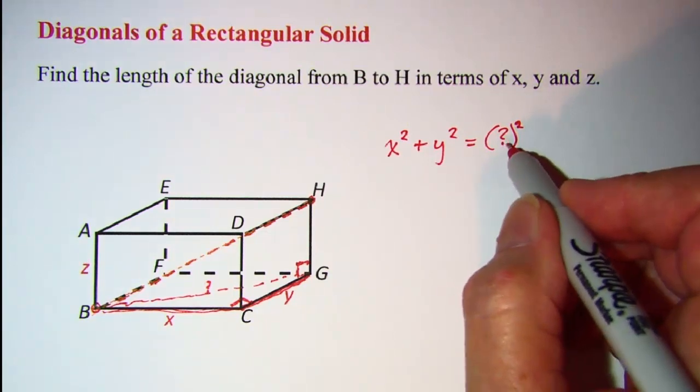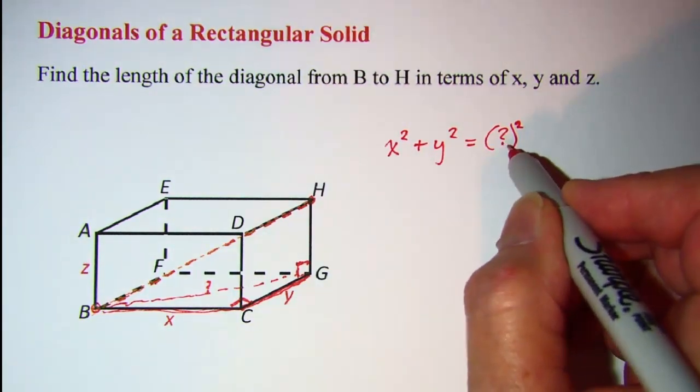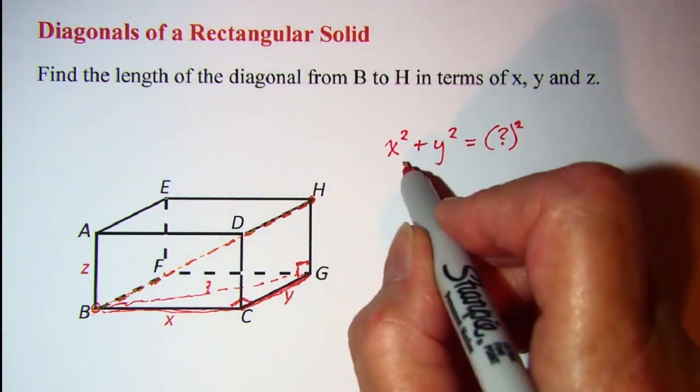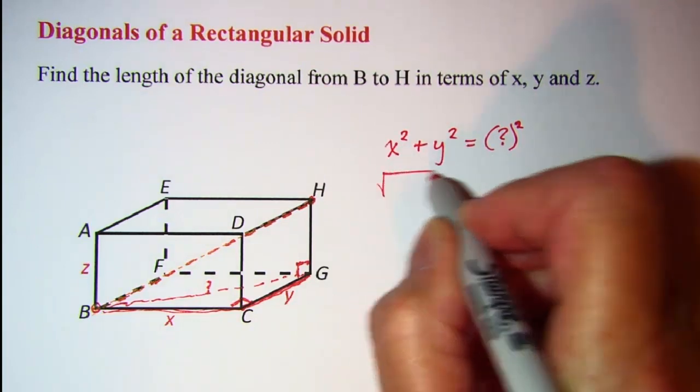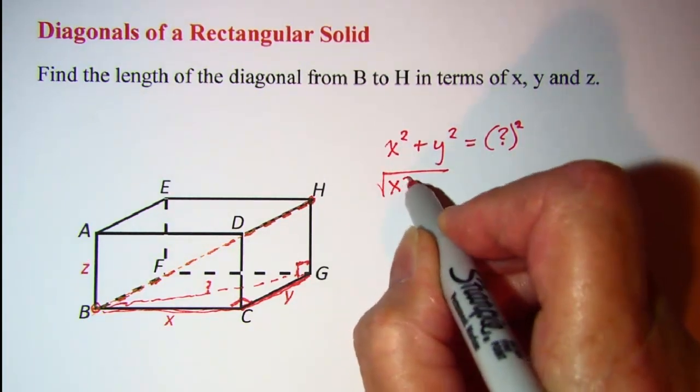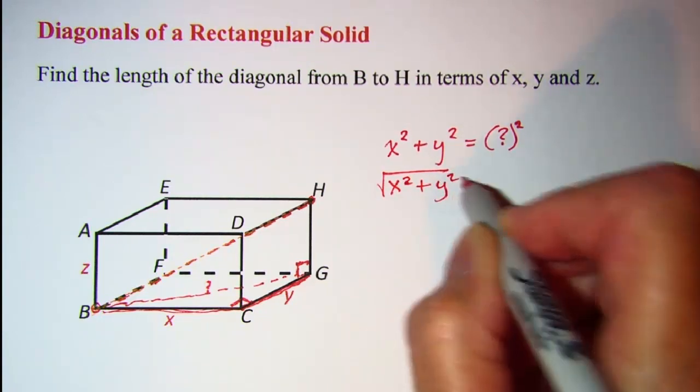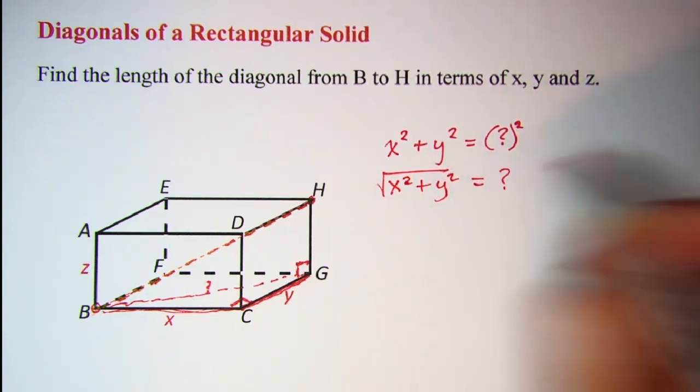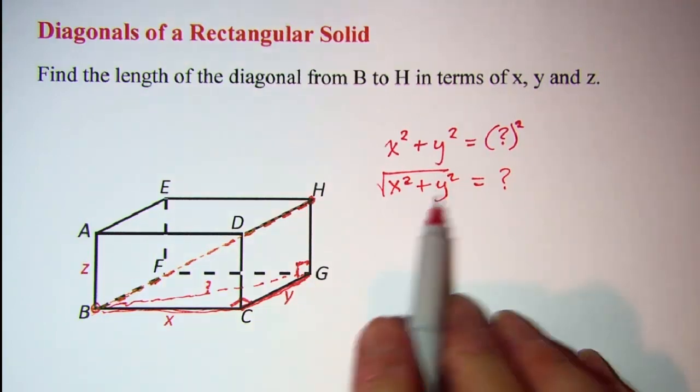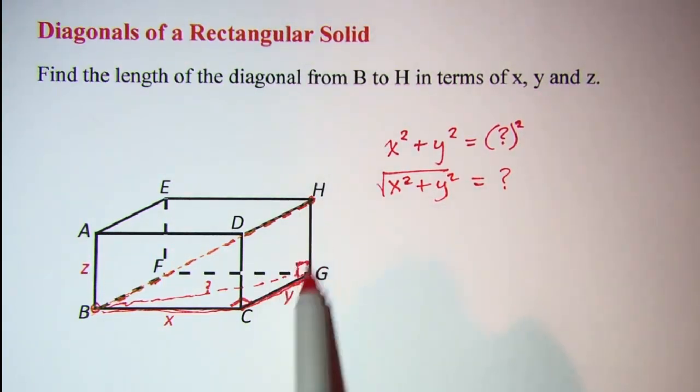And then to get that length of the question mark side I could if I wanted to square root both sides. I have the square root of x squared plus y squared equals question mark. So we'll use that now in this vertical right triangle.